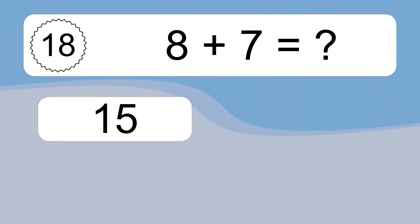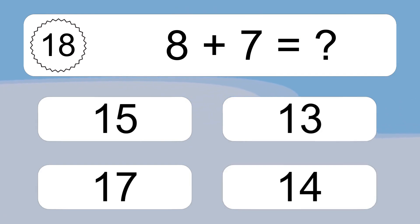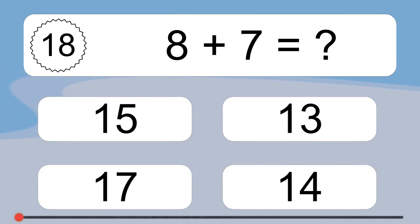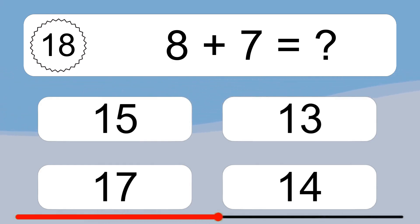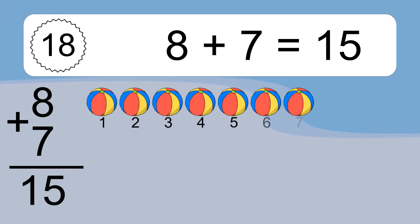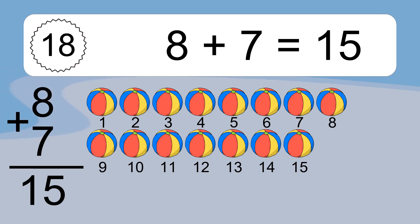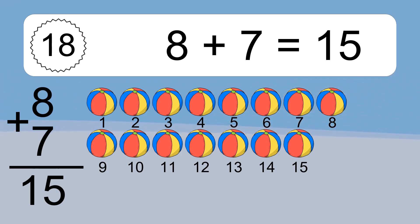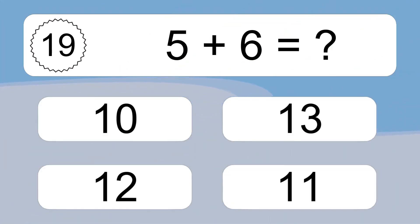8 plus 7 equals what? 8 plus 7 equals 15. Let's count it: 1, 2, 3, 4, 5, 6, 7, 8, 9, 10, 11, 12, 13, 14, 15.